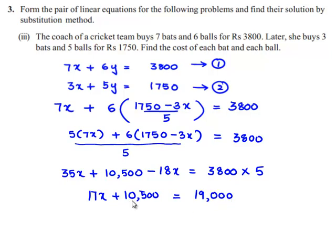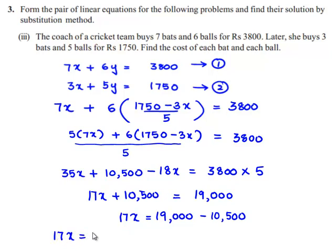Transposing 10500 to the right-hand side, we get 17x is equal to 19000 minus 10500. So 17x is equal to 8500, which implies x is equal to 8500 divided by 17, which is 500.